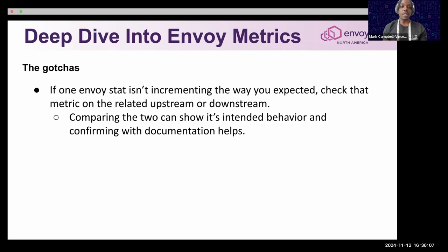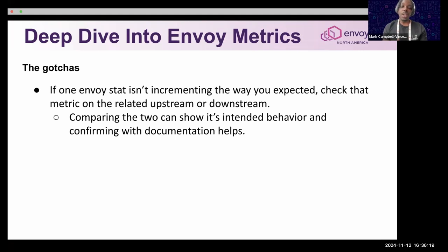For example, AuthZ RBAC may show up in your downstream Envoy proxy but might not show up in your upstream proxy. There's sometimes more digging to do, but cross-referencing the Envoy documentation really helps.